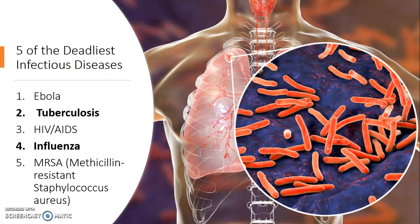There are five of the deadliest infectious diseases. The first and top deadliest infectious disease is Ebola, known mainly in Africa, though there was a scare a couple of years ago about people coming to the United States with Ebola. The second deadliest is tuberculosis. The third is HIV and AIDS. The fourth is influenza. And the last and final deadliest infectious disease is MRSA.